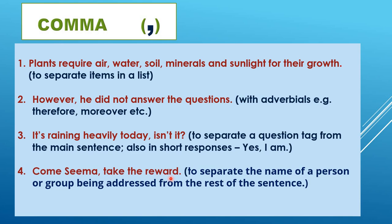Commas are used to separate the name of a person or group being addressed: 'Come, Seema, take the reward.' You are addressing Seema, so you highlight her name with a comma. Comma is the punctuation with the most uses, so you must be very careful when you place them in a sentence.